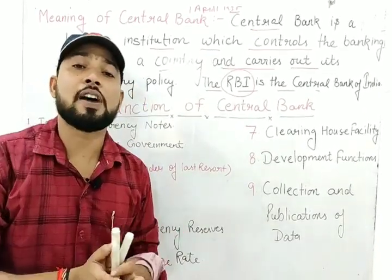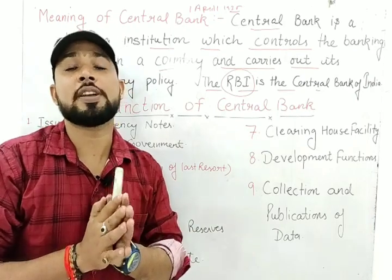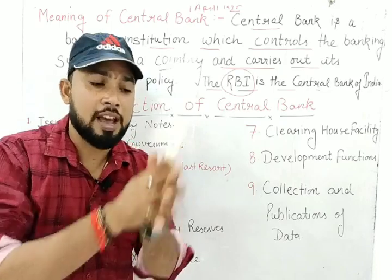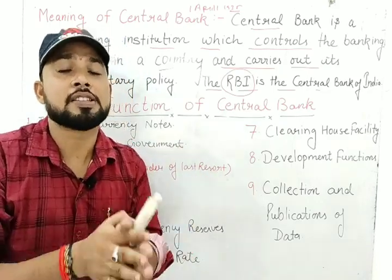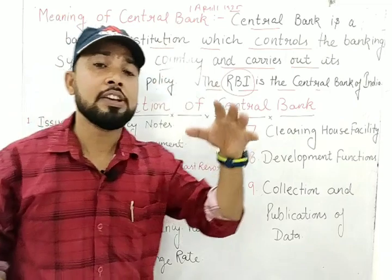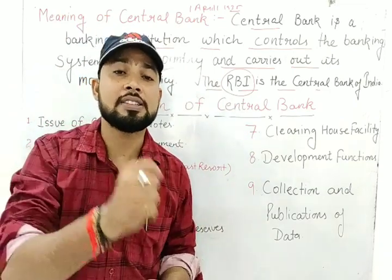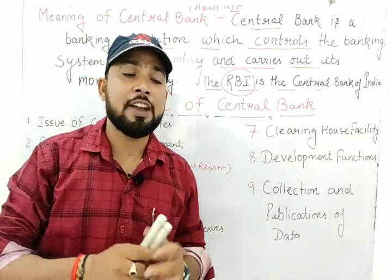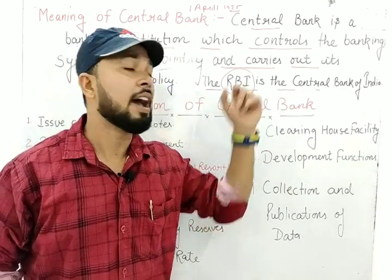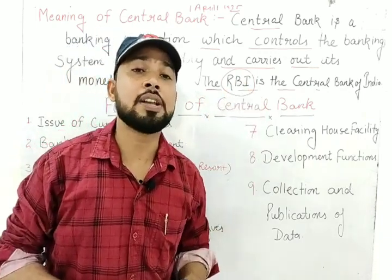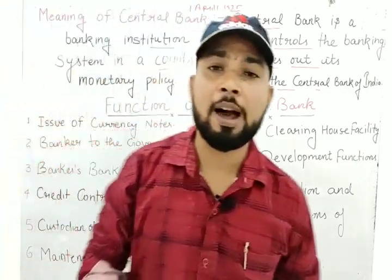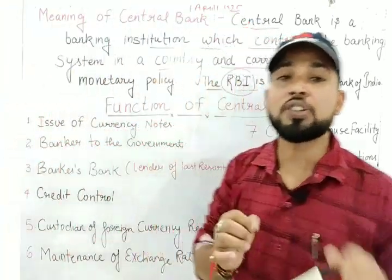The first governor of RBI is Sir Osborne Smith. The first Indian governor of RBI is C.D. Deshmukh, and the present governor of RBI is Shaktikanta Das. Central bank is the apex bank of every country. The name of the central bank of India is Reserve Bank of India, established on 1st April 1935.